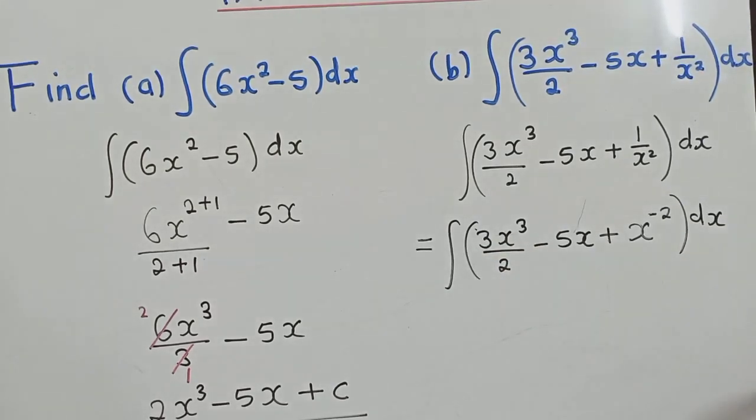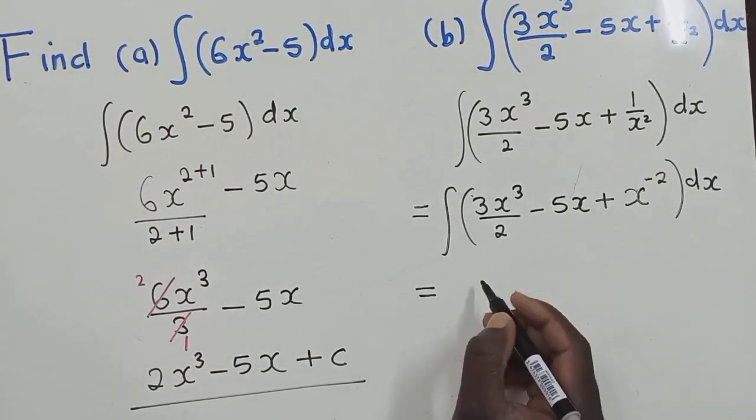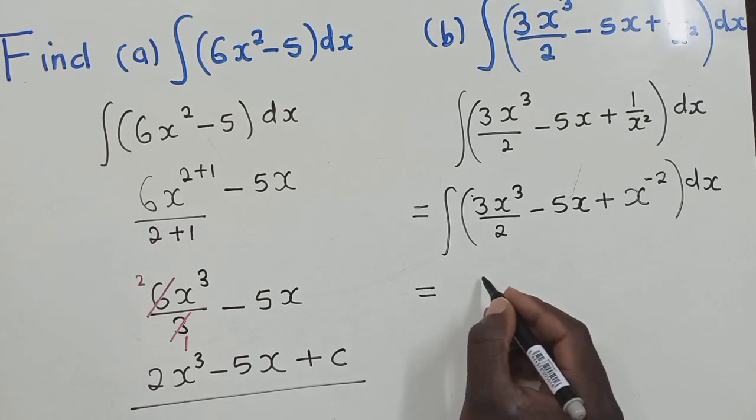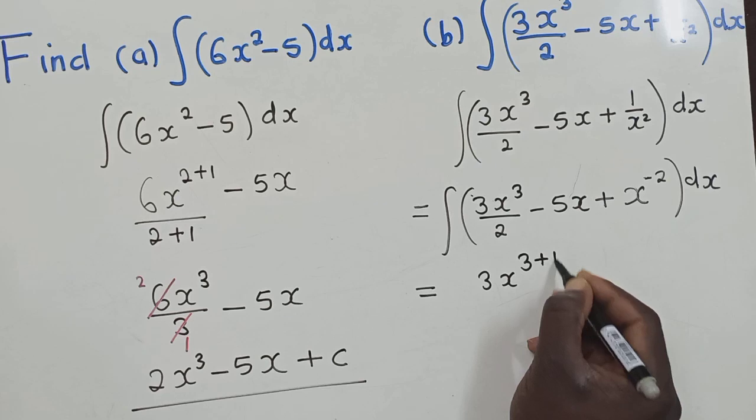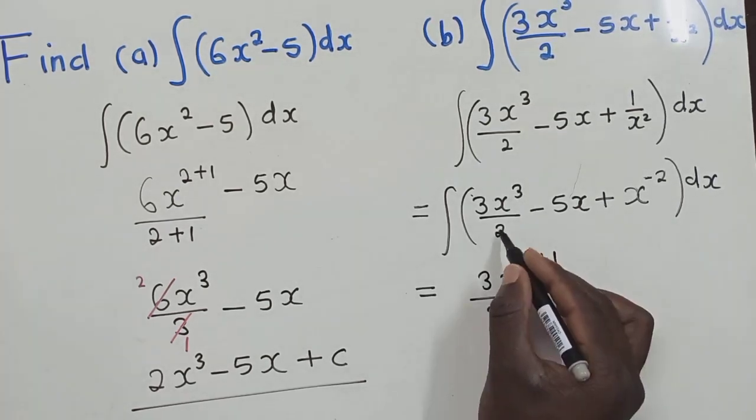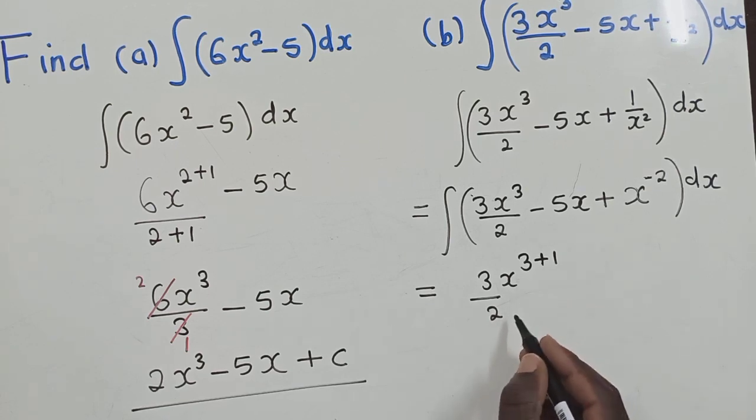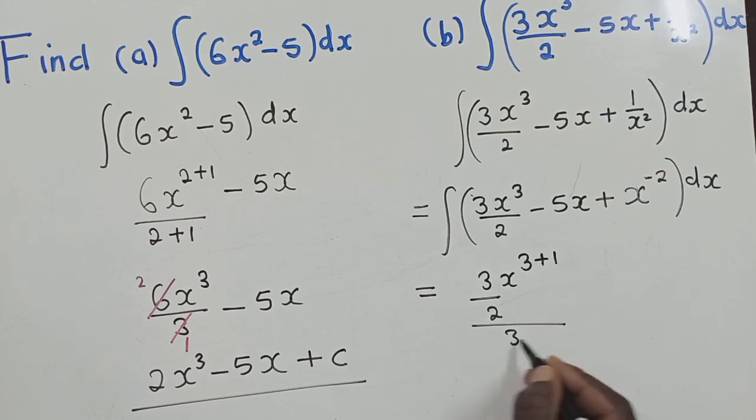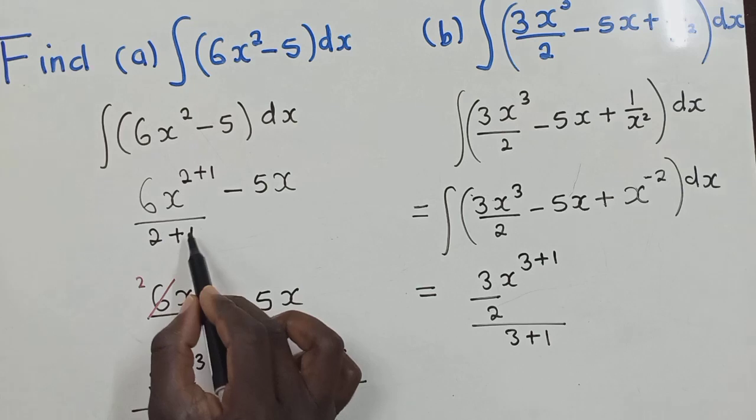So now, at this point, we can integrate. So how do we now integrate? The same procedure, add a 1. So we add a 1 to this power. There is already a 2 here. Don't forget this 2. So once we add there, we divide by that like we did here. We added and divided.